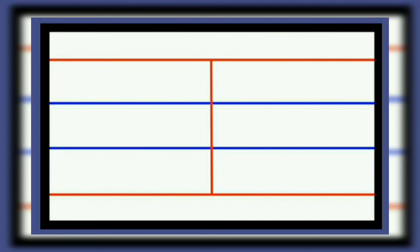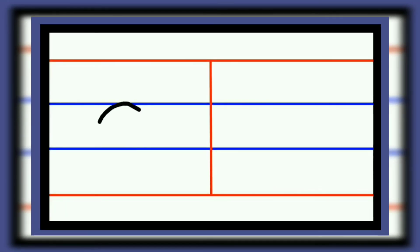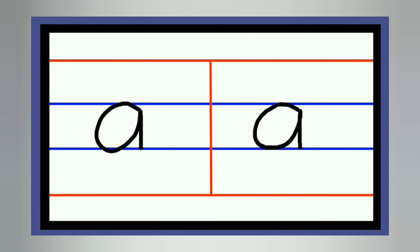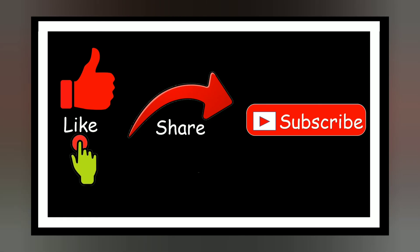Now let's write it on the red and blue line. When we write small letter a, we start from the first blue line, so it will be in between the two blue lines. From the first blue line, write a left curve pattern, go up, and then a standing line. This is our small a.